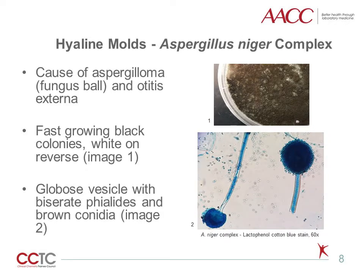Aspergillus niger is also part of a complex. It can cause aspergilloma, or fungus ball, and otitis externa. It forms white, fast-growing colonies that darken as they age, as seen in image one. The colony reverse is white, which helps differentiate it from dematiaceous molds, which have a dark reverse. Microscopically, it has a smooth conidiophore with a globose vesicle with biseriate phialides and brown conidia, as seen in image two.